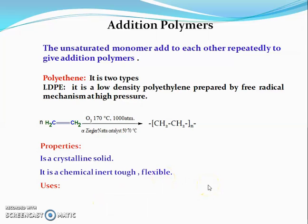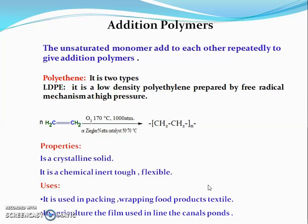The uses of low density polyethylene include high-strength films used in packing, wrapping food products, and textile industries. It is also used in agriculture, where the films are used to line canals and ponds to prevent seepage of water.